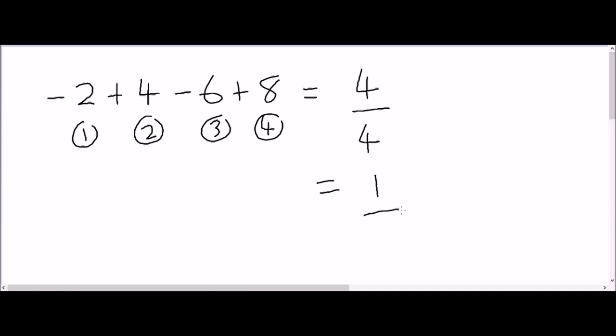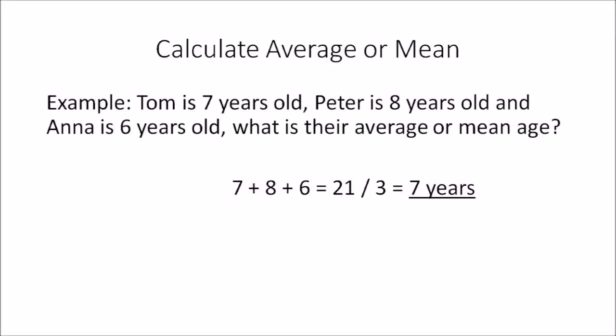Now here is a word problem example. Tom is 7 years old, Peter is 8 years old, and Anna is 6 years old. What is the average or mean age? We add the three ages: 7 plus 8 plus 6, which gives 21. There are 3 numbers in this set, so we do 21 divided by 3, and the answer is 7. Seven years is the average age of Tom, Peter, and Anna.